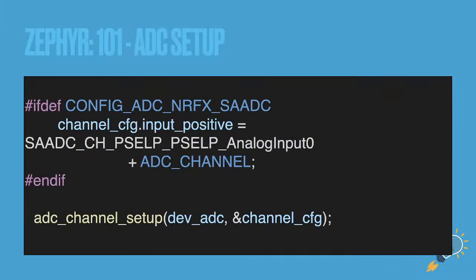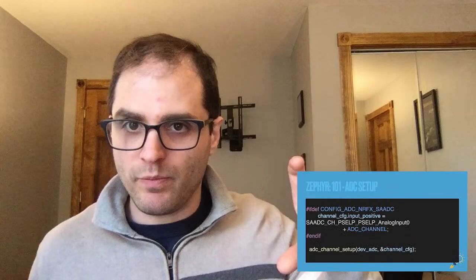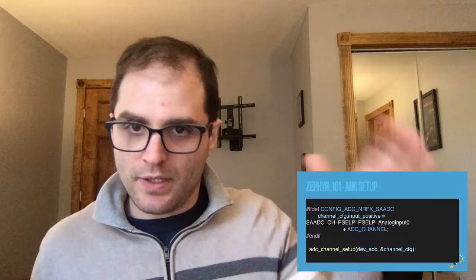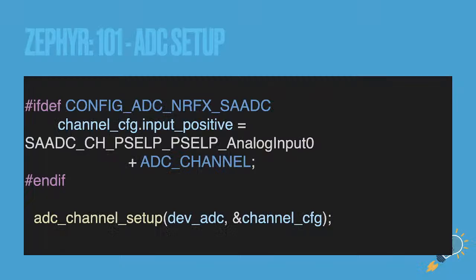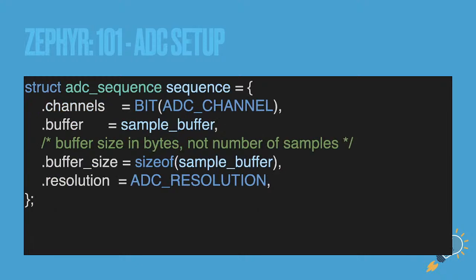The adc_channel_cfg struct is how you set up your ADC: you set the reference, acquisition time, the channel, and differential mode — zero is off, one is on. Differential is device-dependent, so make sure your device supports it and you have the right pins. For NRF devices using the nrfx drivers, there's one extra step — you need to define an input positive offset entry in the struct. If you're having problems with any Nordic chip using ADC, make sure that's being set. Then run adc_channel_setup to apply the configuration.